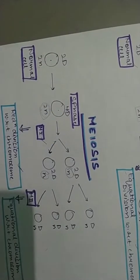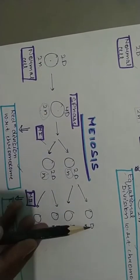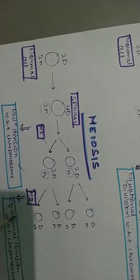Aur jo amount of DNA hai, woh half ho gaya. DNA ka amount har division ke baad, woh meiosis ho ya mitosis ho, meiosis 1 ya meiosis 2 koi bhi ho, hamesha half hoga. 4d se 2d, 2d se d.